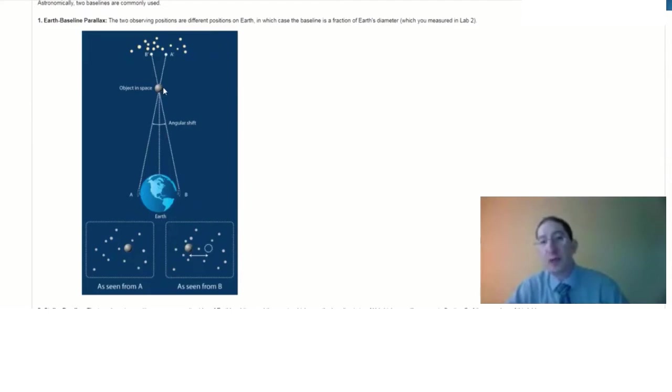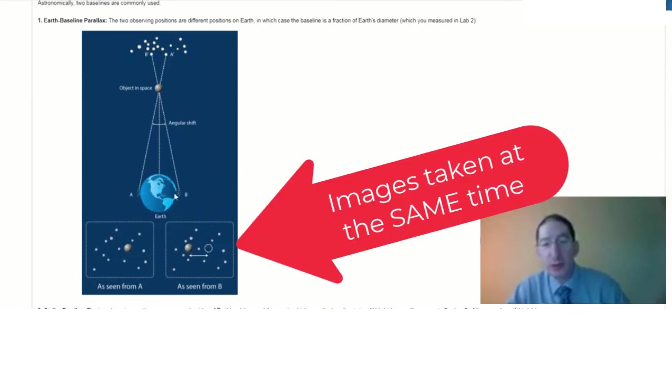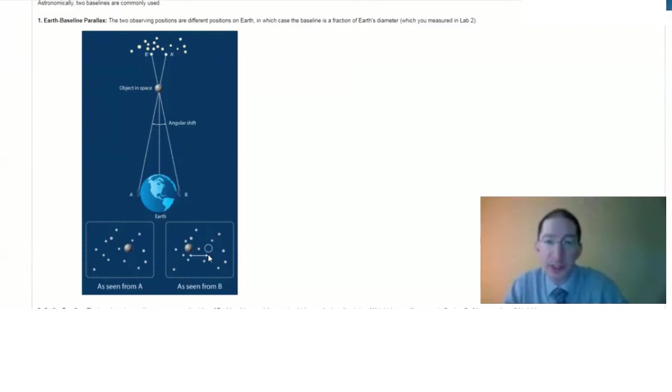Now, when doing Earth baseline parallax, it's very important that the two observers image simultaneously, else your measurement will be contaminated by the object's motion between the first and second observations, and won't be a pure measurement of the parallax shift.